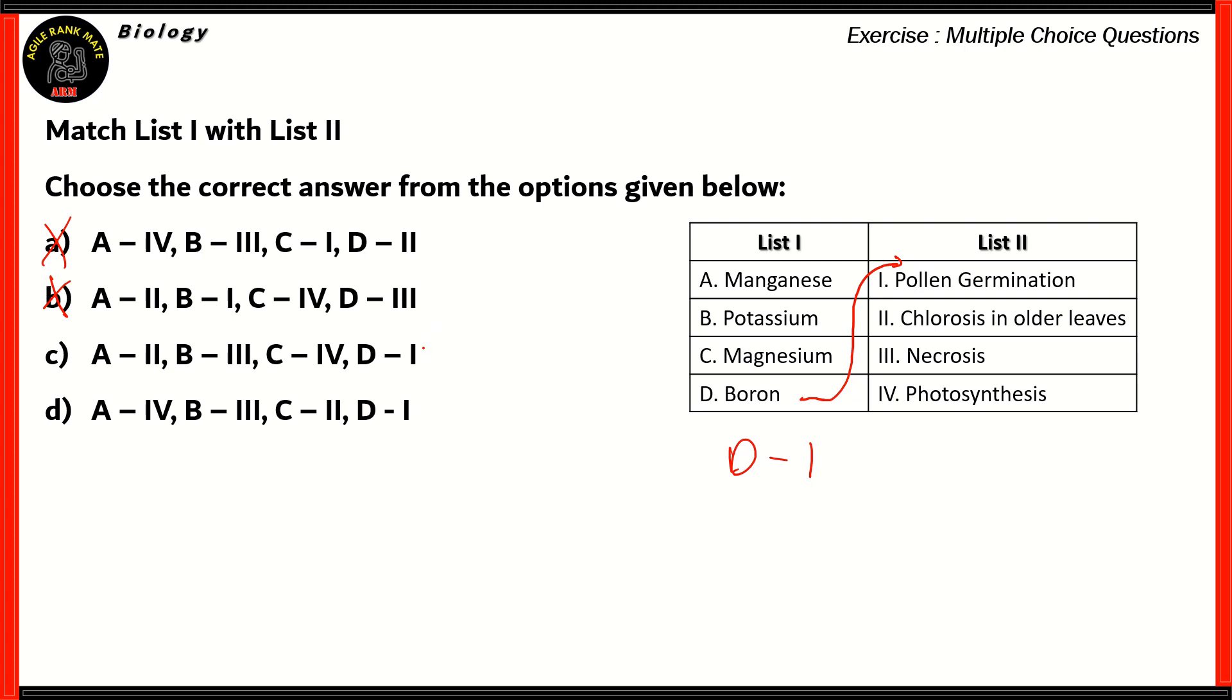So, now that we know it's either C or D, let's look at the next obvious statement. Another important statement would be that manganese is a key element for photosynthesis. So, it's connected to photosynthesis. So, list 1 A connects with list 2 number 4. So, therefore, that means you can also see that option D would have to be the right option because it's the only option that contains A4 and D1 in the same set.